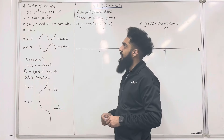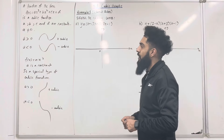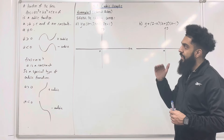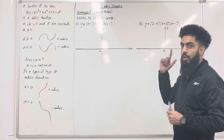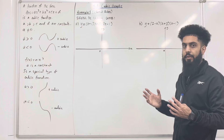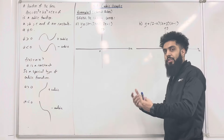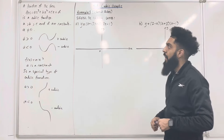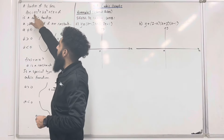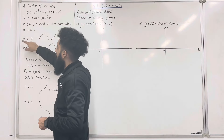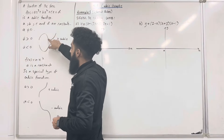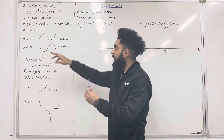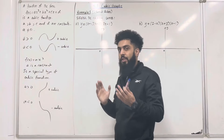A function of the form f of x equals ax cubed plus bx squared plus cx plus d is a cubic function. a, b, c and d are constants; a is not equal to 0. The shape of the cubic function depends on the coefficient of x cubed, which is a. If a is greater than 0, this is the shape — we call it a positive cubic. If a is less than 0, this is the shape — we call it a negative cubic.